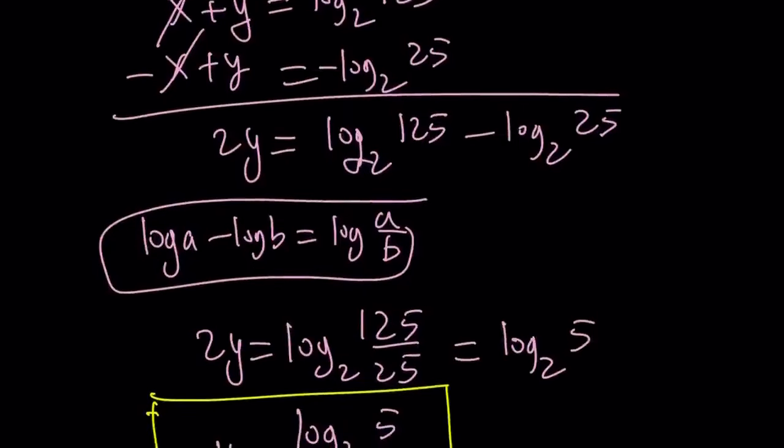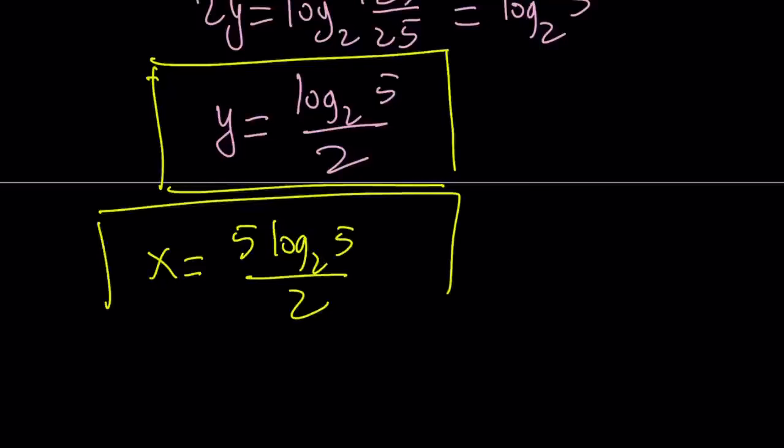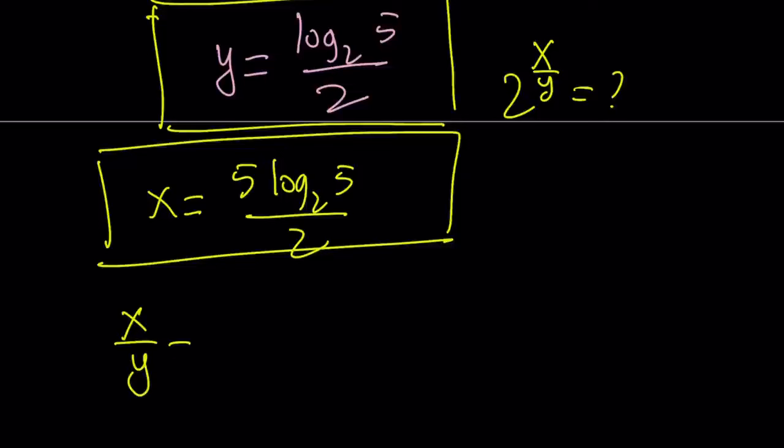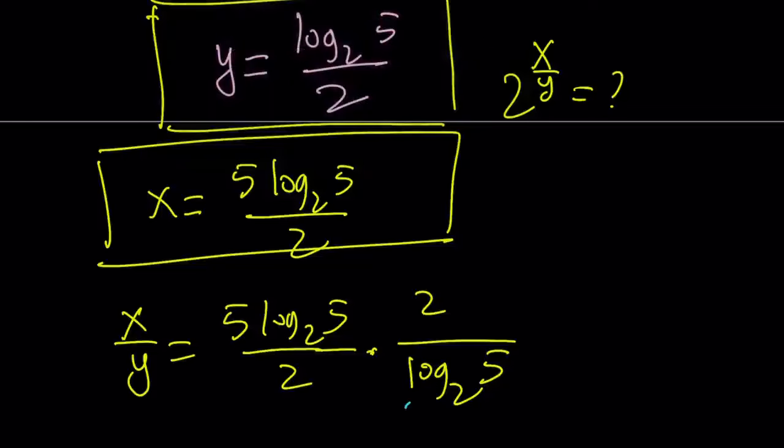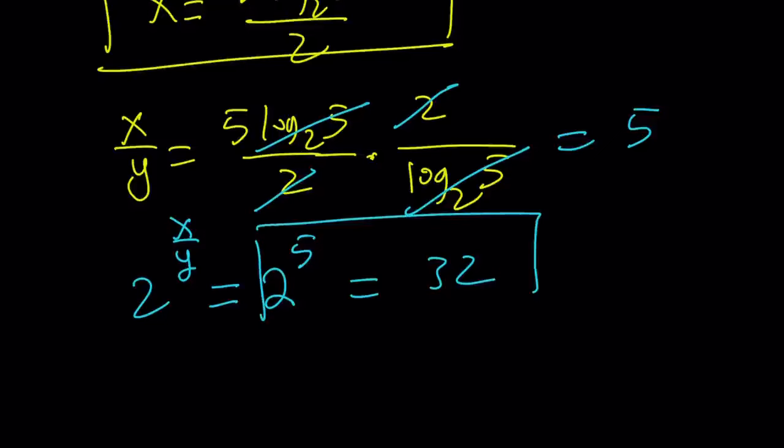So that is the value of y in terms of log 5, and the value of x was 5 log 5 divided by 2. I'm supposed to evaluate 2 to the power x over y. So I have to divide x by y. What is x over y? x over y is just going to be x times the reciprocal, which is 2 over log 5. Log 5 cancels out, and the 2 cancels out, leaving us with 5. So x over y is 5. And 2 to the power x over y is 2 to the power of 5, which equals 32.